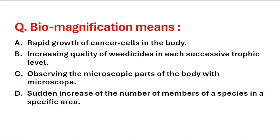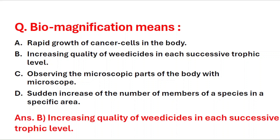Next question: biomagnification means — A: rapid growth of cancer cells in the body, B: increasing quantity of pesticides in each successive trophic level, C: observing the microscopic parts of the body with a microscope, D: sudden increase of the number of members of a species in a specific area. Biomagnification means increasing quantity of pesticides in each successive trophic level.